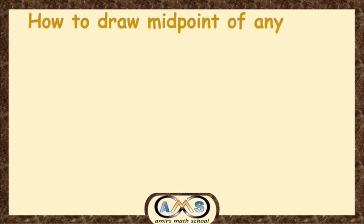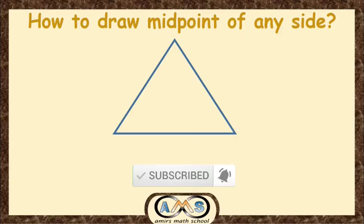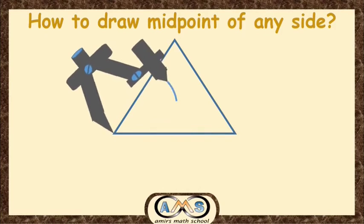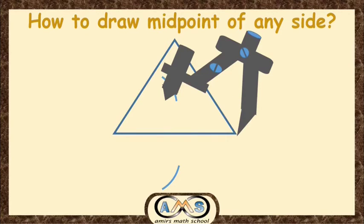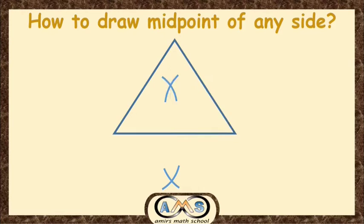Let's learn how to draw the midpoint of any side of any triangle. This is our triangle, and we want to draw the midpoint of any side. First, taking one end at the center, draw two arcs with radius length more than half of the given side. Same process for the other end of the given side. Now join the two intersecting points with a line. This line intersects with the given side at one point, which is the midpoint of the given side.